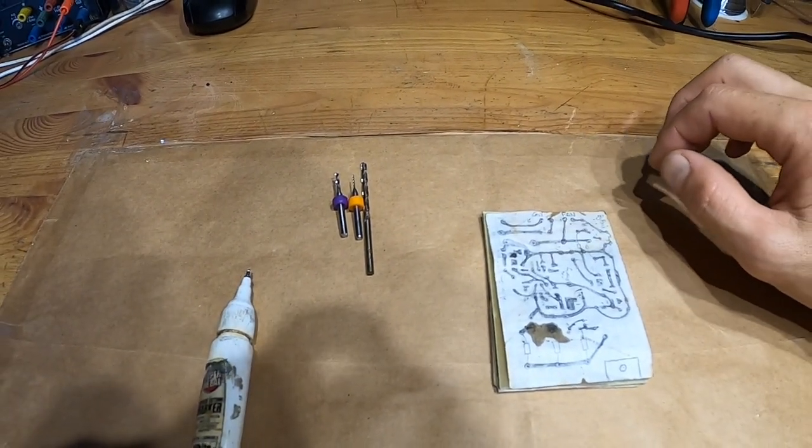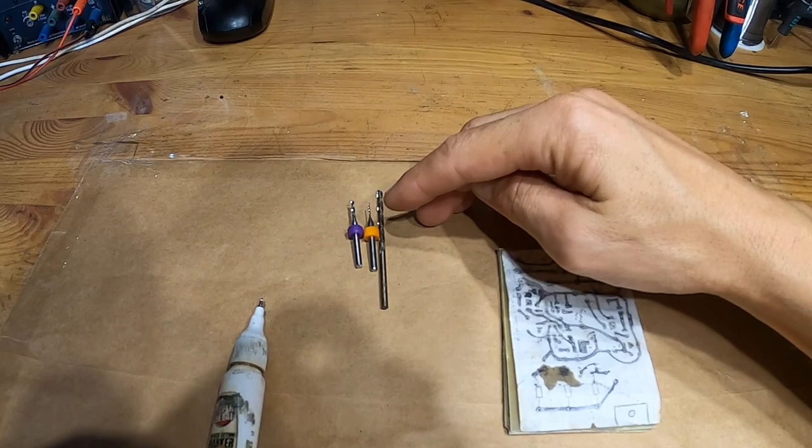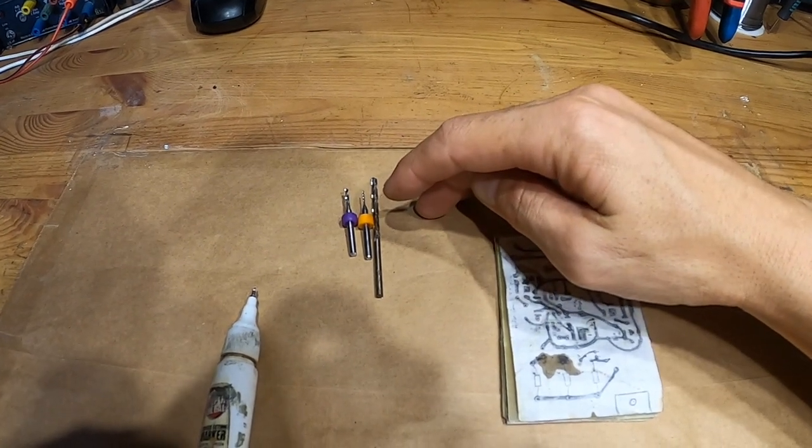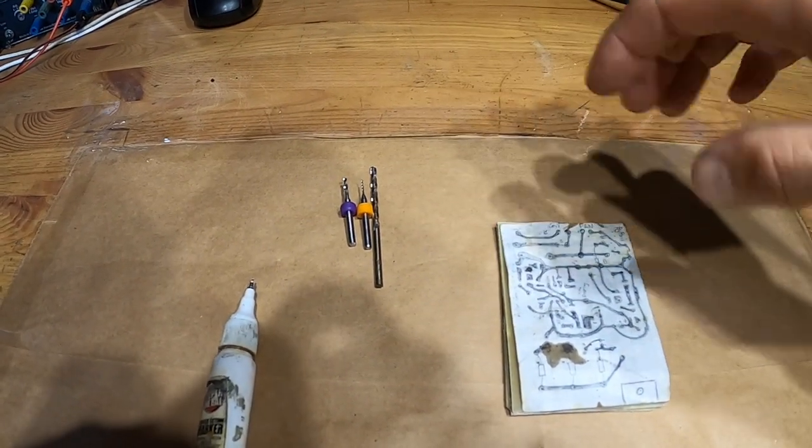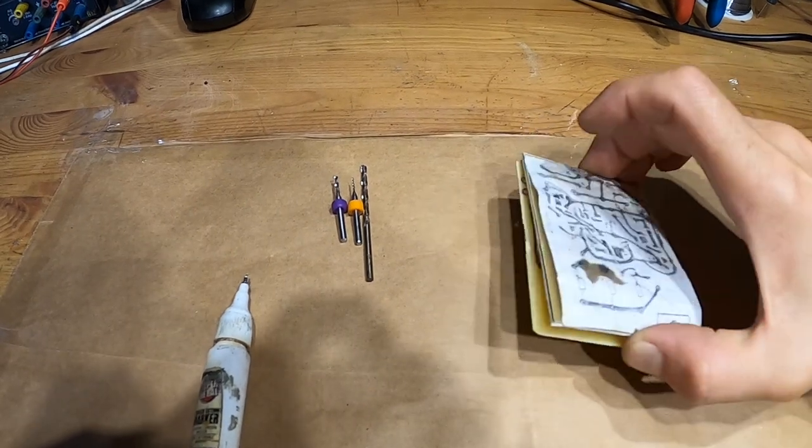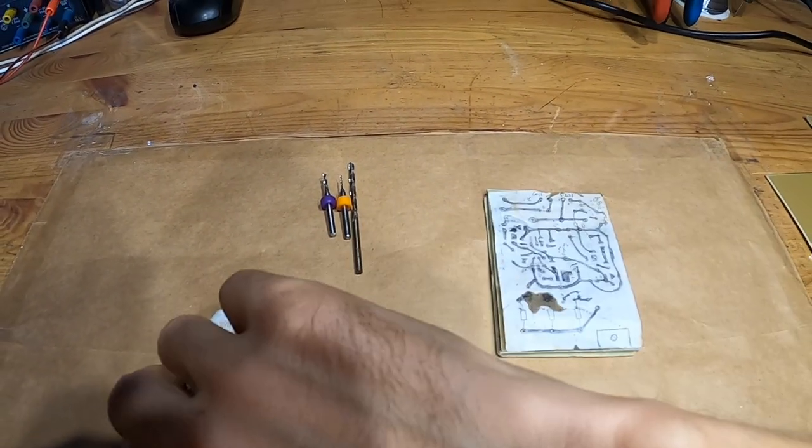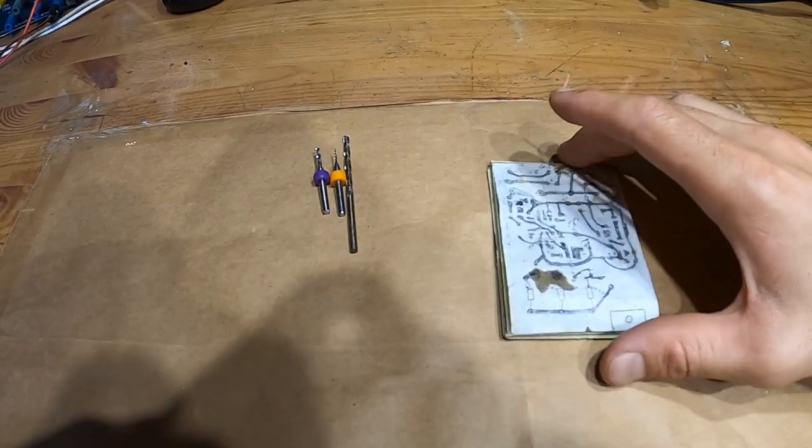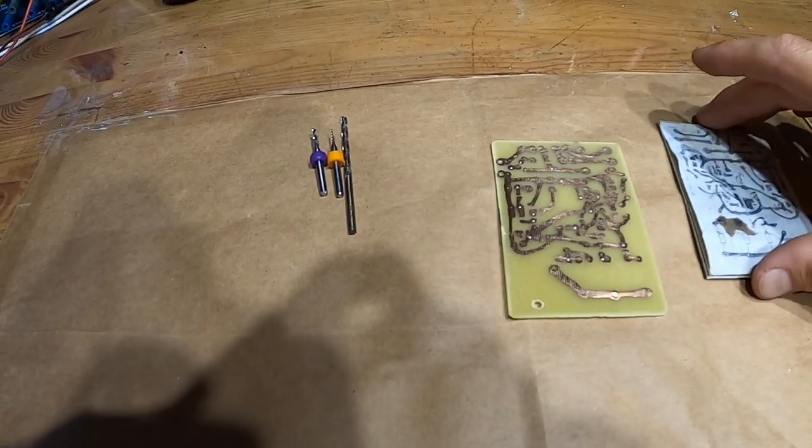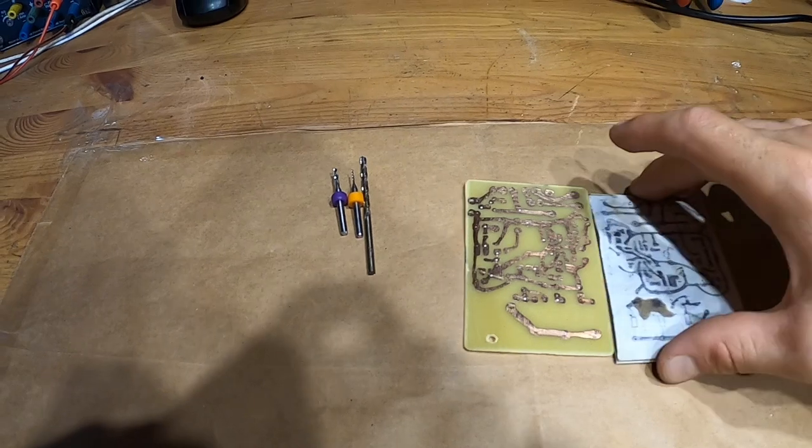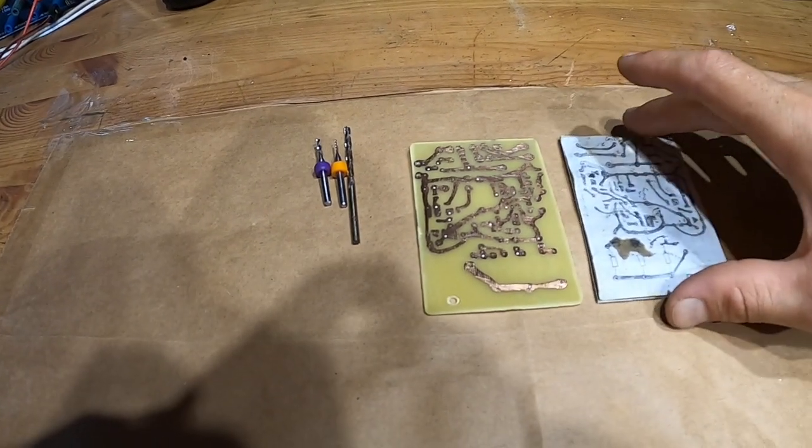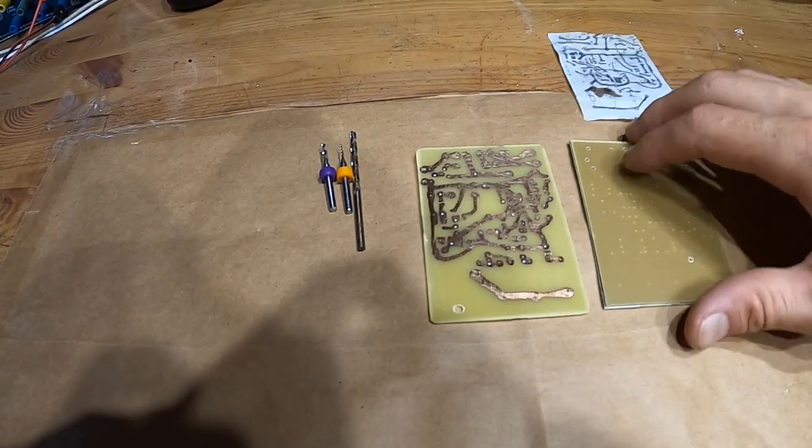I would recommend using a press drill because these bits are very fragile, and if you wiggle it as you drill, especially if you have two boards, you can definitely break it very easily. So let's go ahead and draw one more board and you'll see how I'm doing it, start to finish.